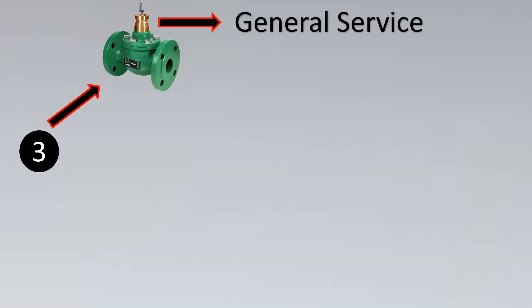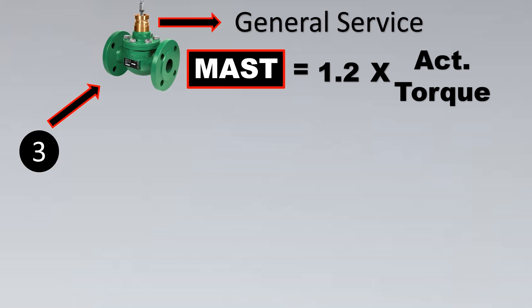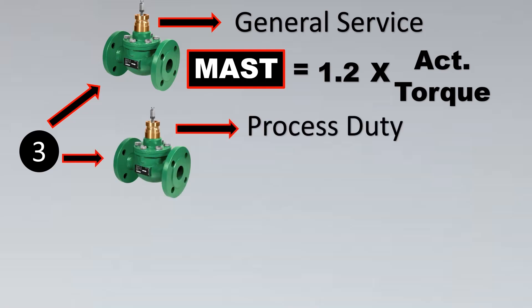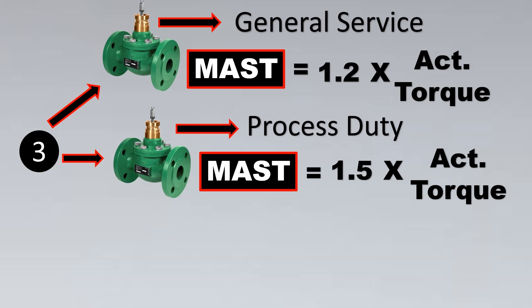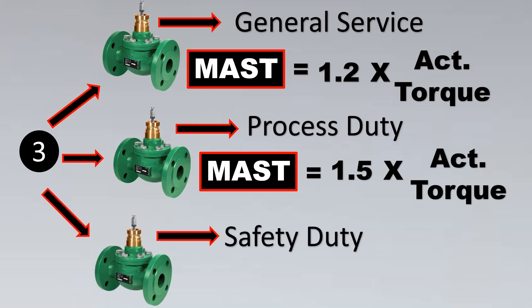The first point is when the valve is just put into general service. As a thumb rule, MAST should be around 1.2 times the actuator torque when the valve is in general service. But if it's used for heavy process duty like blowdown, the MAST may go up to 1.5 times the actuator torque.